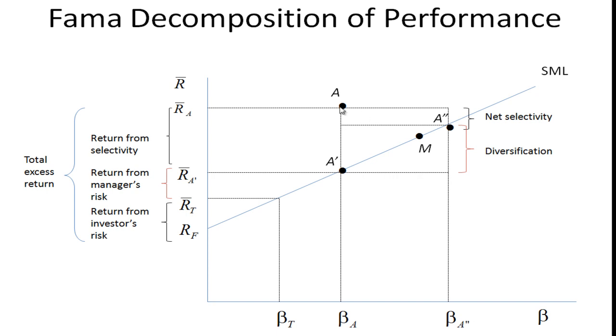These two portfolios have the same systematic or non-diversifiable risk, but they don't have the same total risk. Why is that? In order to get this higher expected return, the portfolio manager had to deviate from this market portfolio. He had to invest in some things and this is not an efficient portfolio. It's not a combination of the risk-free asset and the market portfolio.